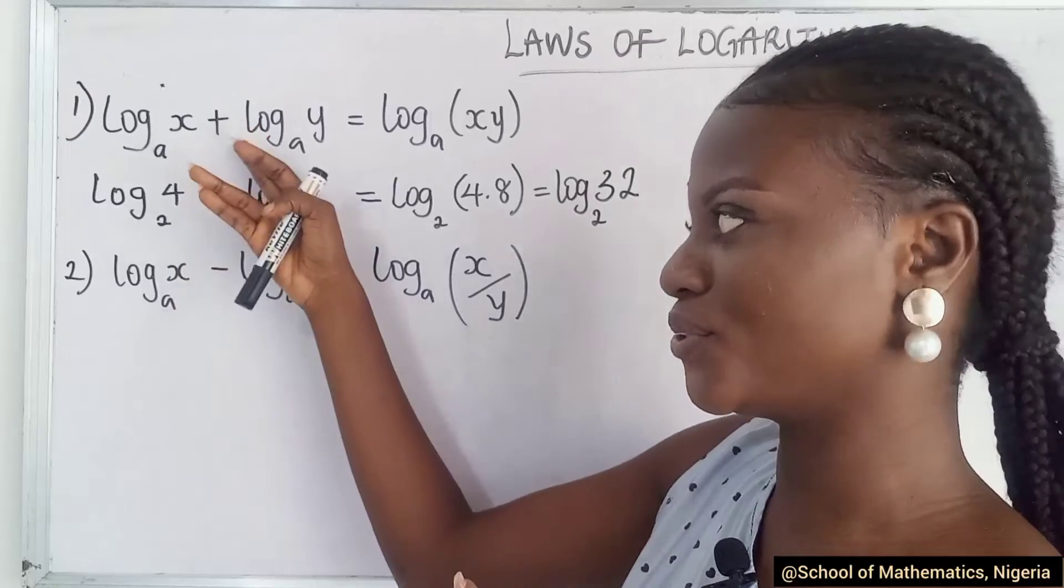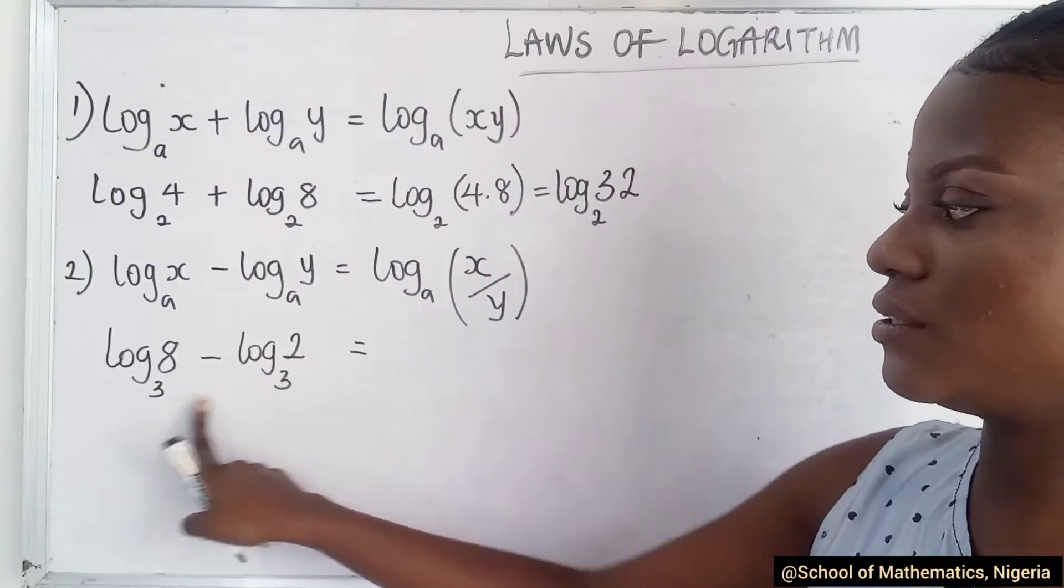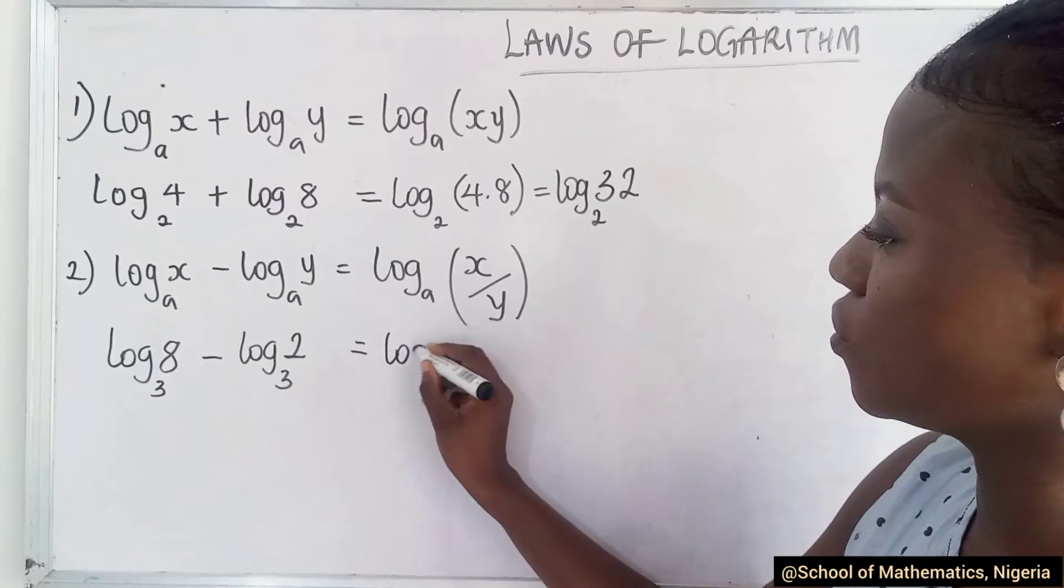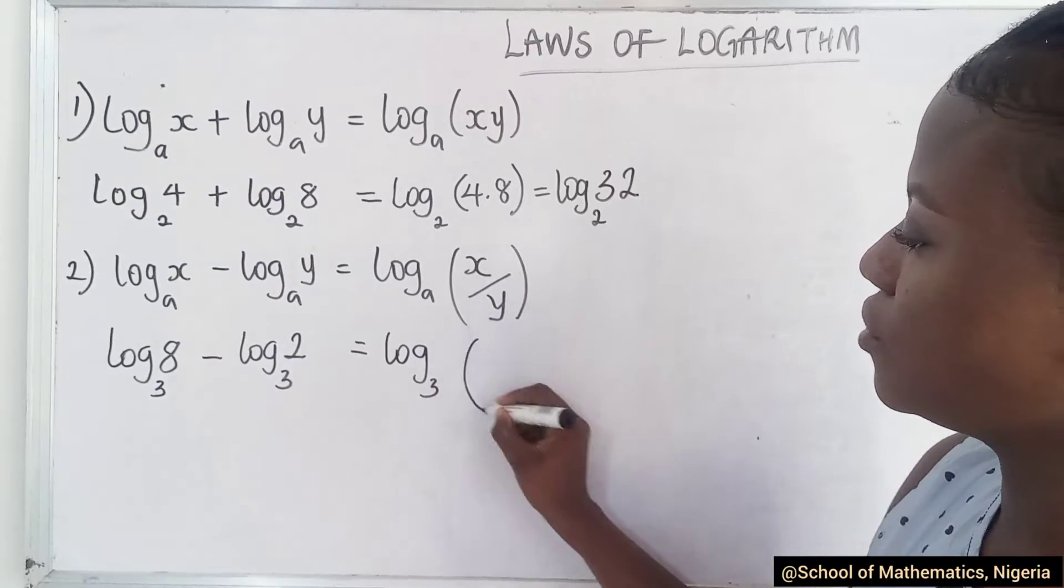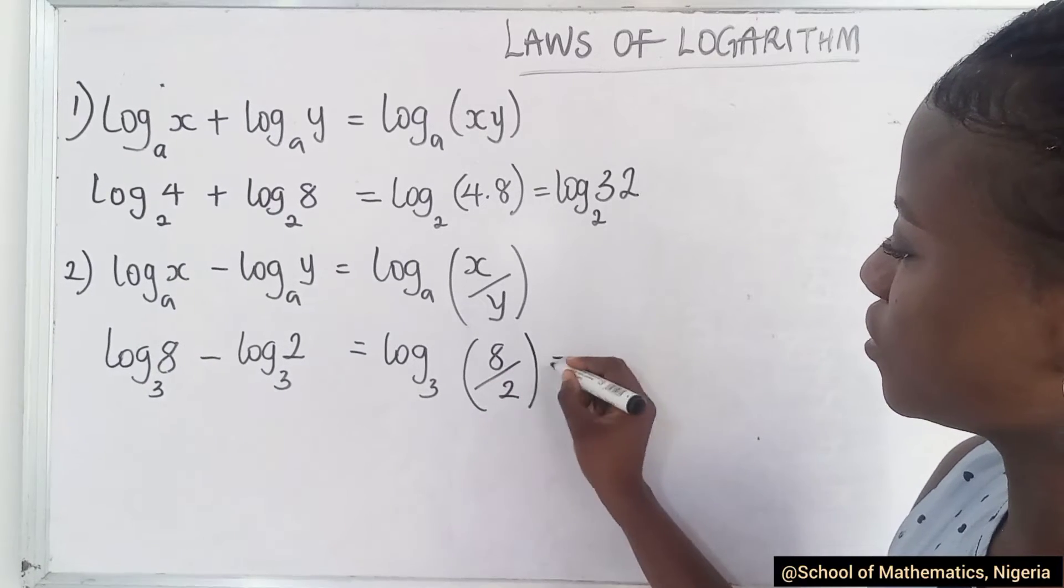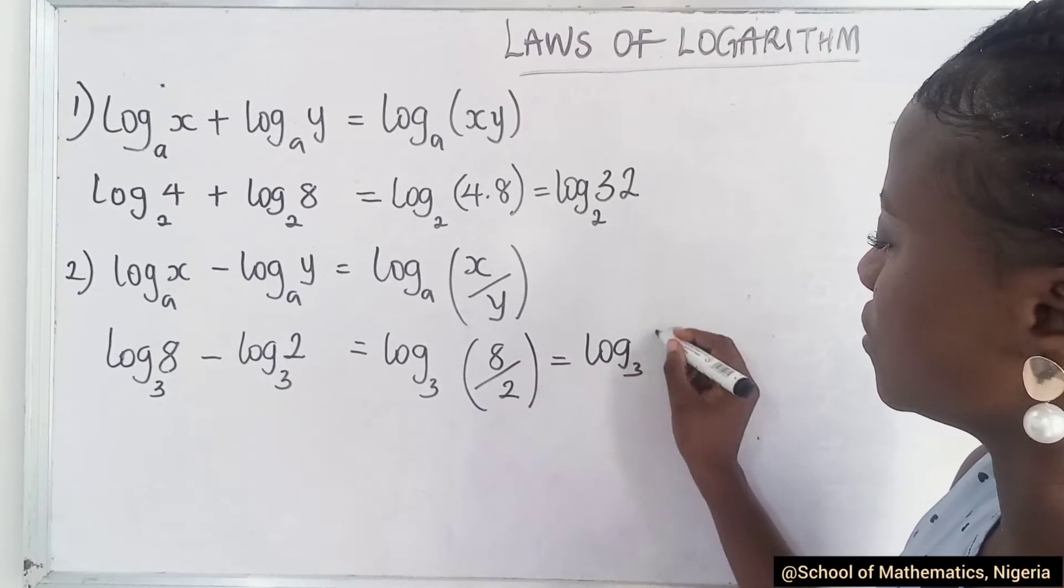You know that whatever addition does, subtraction would like to copy this. You have the same basis and a subtraction sign, so you pick one of it, and then you divide it by 2. So this gives you log to base 3, 8 divided by 2.